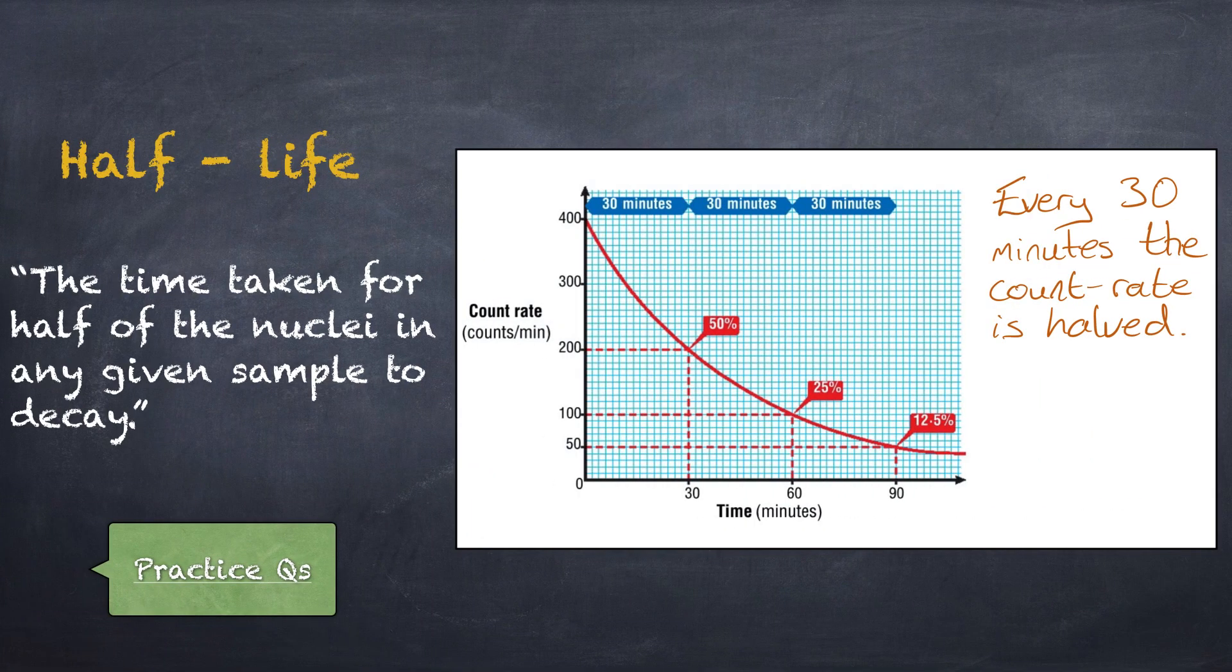The half-life of an element is the time taken for half nuclei in any given sample to decay. Initially the count rate is 400 counts per minute. At half this value, 200 counts per minute, it took 30 minutes. After another 30 minutes it dropped from 200 to 100 and so forth. Therefore we can conclude that the half-life is 30 minutes.